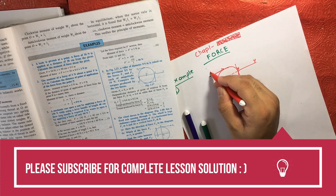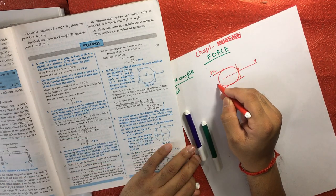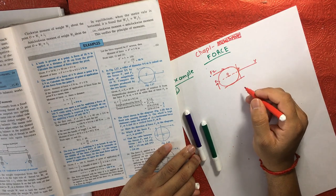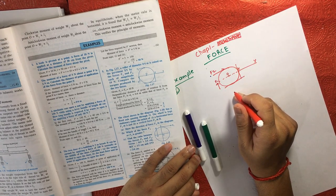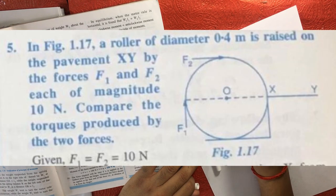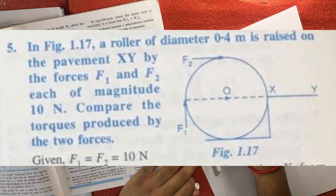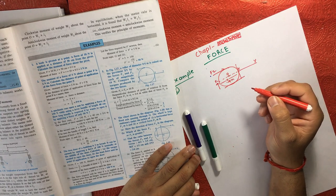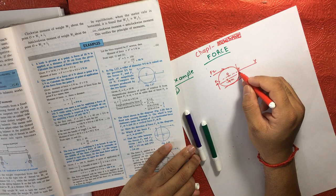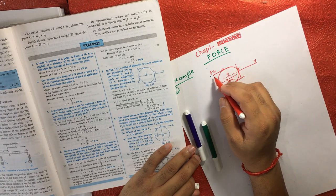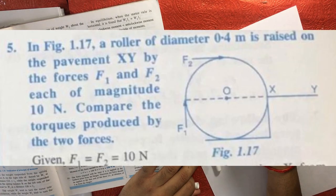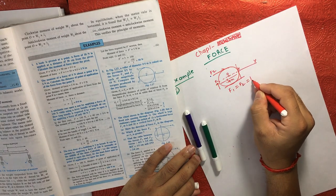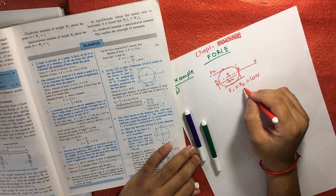One is F2 and another is F1, and this is the center of the roller. The roller has a diameter of 0.4 meter and is raised on pavement XY, meaning it's resting on points X and Y. If we apply forces F1 and F2, each having a magnitude of 10 Newton, then F1 equals F2 equals 10 Newton. These two forces are equal.